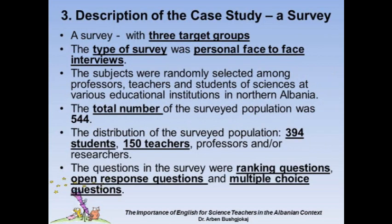Section 3 describes the case study of a survey. A survey was conducted with three target groups to observe how English is perceived by the survey population regarding its value as a means of communication, a tool for research, instruction, and institutional advancement for science institutions. The type of survey was personal face-to-face interviews. The subjects were randomly selected among professors, teachers, and students of sciences at various educational institutions in northern Albania. They all expressed their consent and willingness to participate. The total number of the surveyed population was 544, including researchers, teachers or instructors at various levels of science education, and students from various high schools and universities.